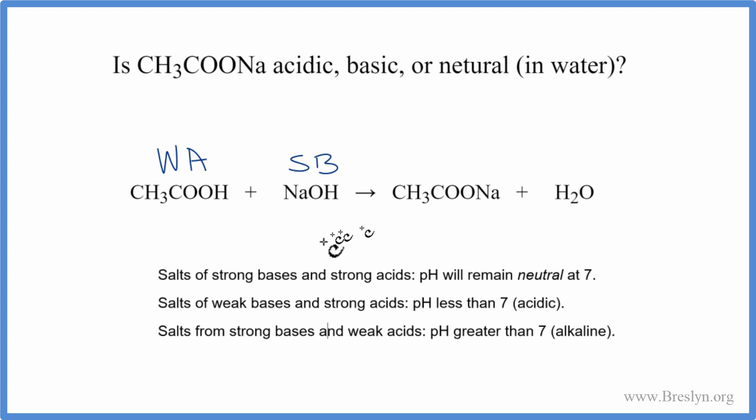Looking at our rules, we see that with a weak acid and a strong base, the pH is greater than 7. That's going to be alkaline or basic.